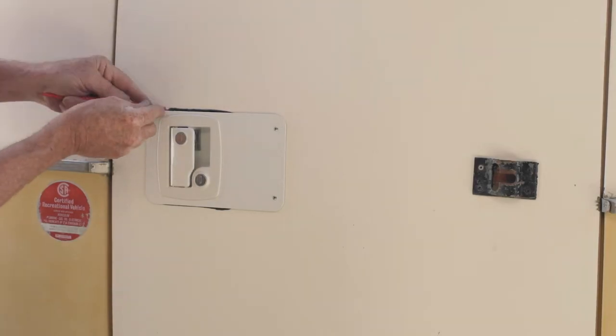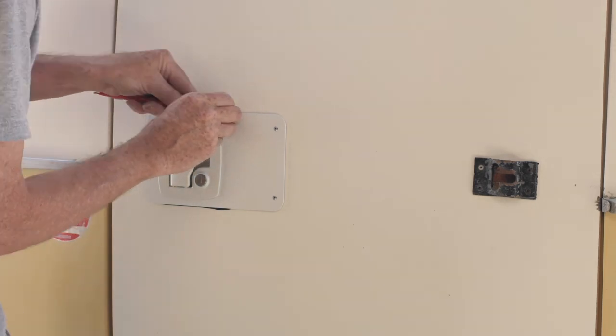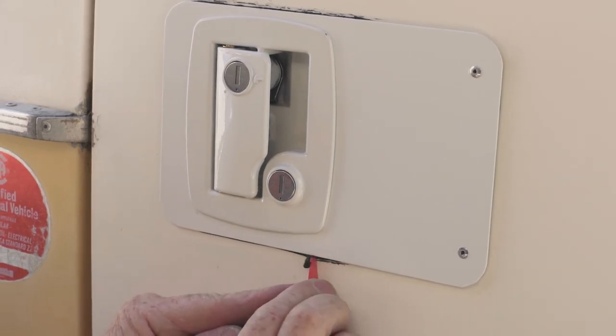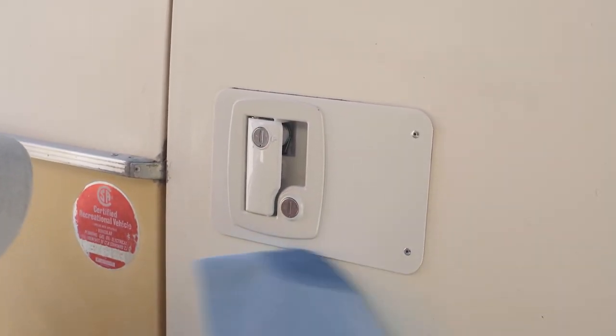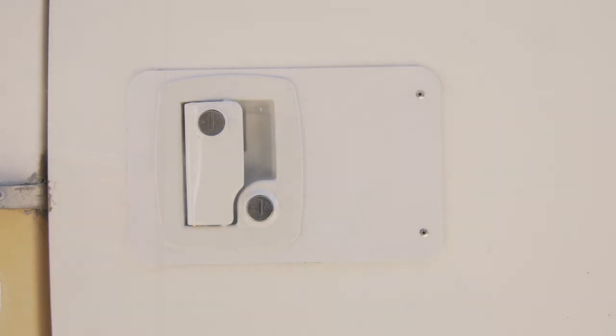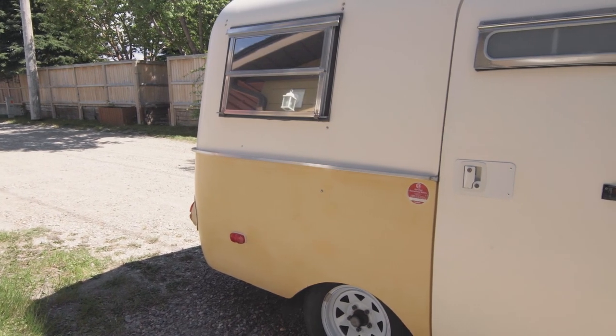Remove any excess butyl tape that is squeezed out and then clean the area with a cloth or shop rag dampened with solvent. Congratulations! Your new lock assembly is complete.